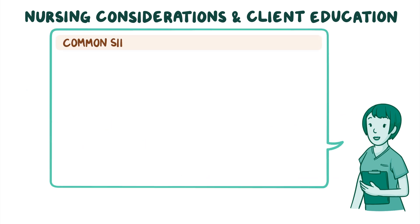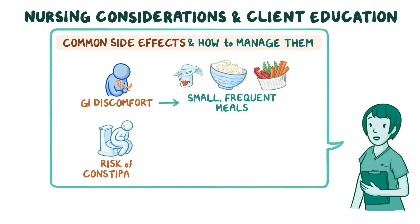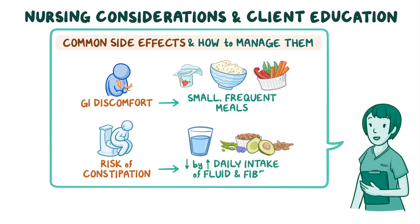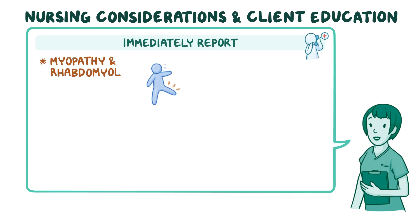Let your client know about common side effects they may experience during therapy and how to manage them. If your client experiences gastrointestinal discomfort, recommend small frequent meals. Teach them that the risk of constipation can be reduced by increasing their daily intake of fluid and fiber. Lastly, stress the importance of immediately reporting symptoms of myopathy and rhabdomyolysis, such as unexplained muscle pain, weakness, or brown urine.